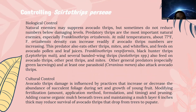The next topic is controlling avocado thrips, Scirtothrips perseae, using biological control. Natural enemies may suppress avocado thrips but sometimes do not reduce numbers below damaging levels. Predatory thrips are the most important natural enemies, especially Franklinothrips orizabensis. At temperatures above 77°F, F. orizabensis density can increase readily as avocado thrips numbers rise. The predator also eats other thrips, mites, and whiteflies, and feeds on avocado pollen and leaf juice.